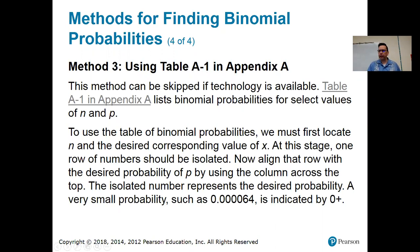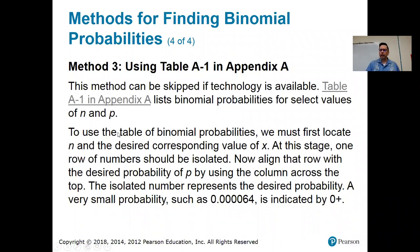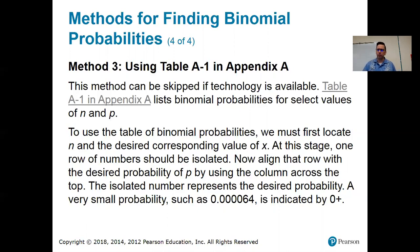I have a link to the table here on my PowerPoint. This table will give you a binomial probability for certain values of N and P. I think the table only goes up to N equals 15. And then the values of P go up in increments of like 0.05 or 0.10. So it doesn't have every single value of P, and it doesn't have every single value of N, but it has maybe the most common ones.